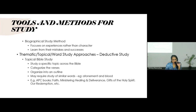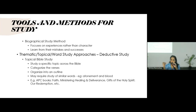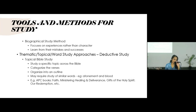For example, if I'm studying the topic of atonement, when scripture mentions the blood of the lamb or the blood of sacrifices, I can take those things into consideration in my study of atonement. We have books like Ministering Healing and Deliverance and Gifts of the Holy Spirit that are written as topical studies — studies of these topics across scripture.